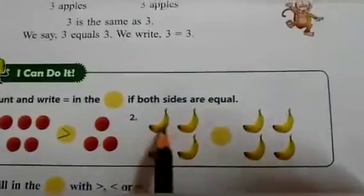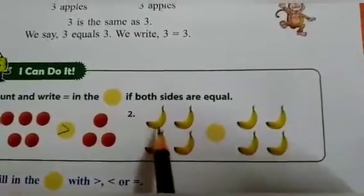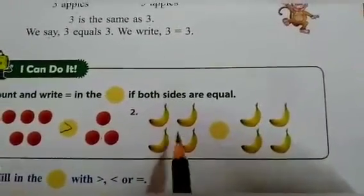Now in bananas, one, two, three, four. One, two, three, four. So they both are equal, so we will put equal sign.